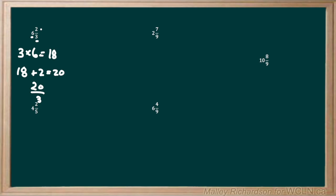2 and 7 over 9. Again we take the denominator and multiply it by the whole number out front. So 9 times 2 gives us 18, and then 18 plus 7 gives us 25. So 25 is our new numerator and we keep the same denominator of 9, giving us 25 over 9. This makes sense as an improper fraction because the numerator of 25 is greater than 9.